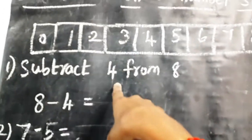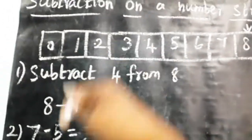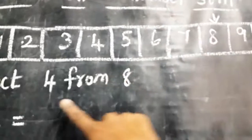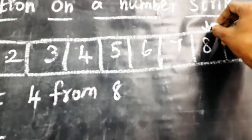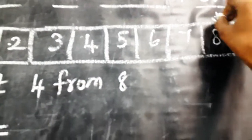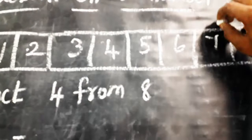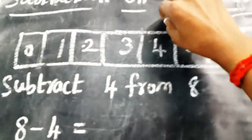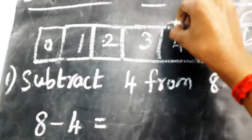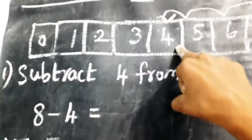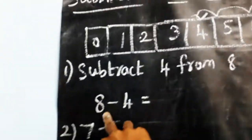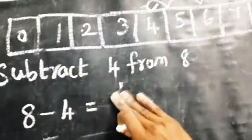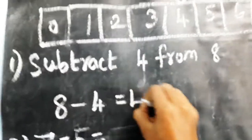How many numbers can you go backward? Because subtract means backward. How many numbers? Yes, four. Just go to the backward of four numbers: one, two, three, four. So we reached on which number? Yes, four. Therefore, eight minus four is equal to — yes, four.